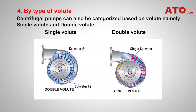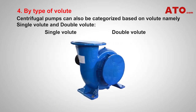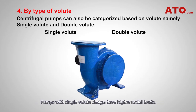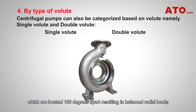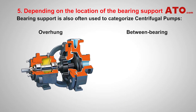Centrifugal pumps can also be categorized based on volute — namely single volute and double volute. Single volute: this kind of pump is usually used in small, low-capacity pumps, where a double volute design is impractical due to the relatively small size of the volute passageway, making quality casting difficult. Pumps with single volute design have higher radial loads. Double volute: this kind of pump volute has two partial volutes located 180 degrees apart, resulting in balanced radial loads. Most centrifugal pumps are of double volute design, depending on the location of the bearing support.